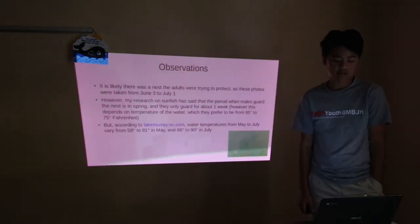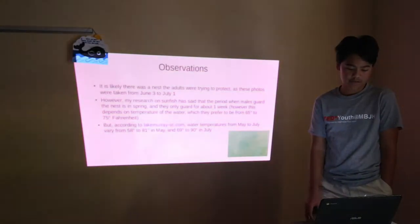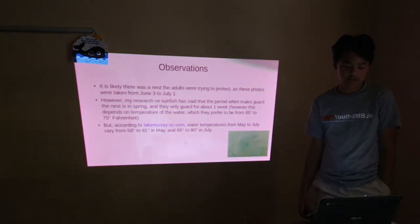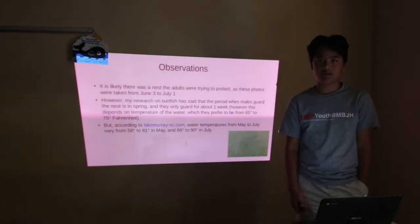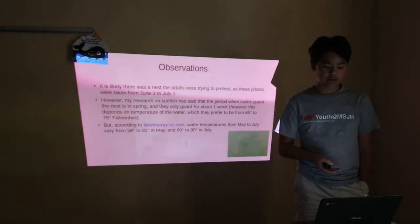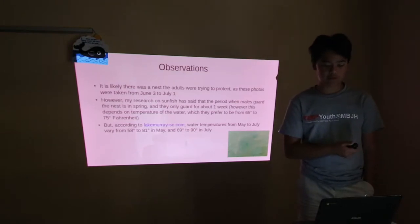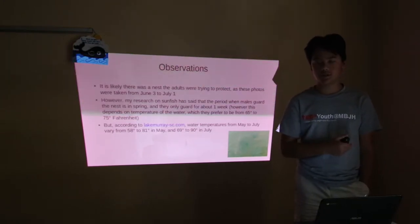It is likely there is a nest that adults were trying to protect as these photos were taken from June 3rd to July 1st. However, my research on sunfish has said that the period when males guard the nest is in spring and they only guard for about one week. However, they said that when they guard and how long they guard is completely based on the temperature of the water which they prefer to be from 65 to 75 degrees Fahrenheit.